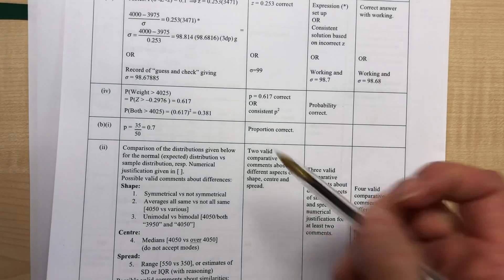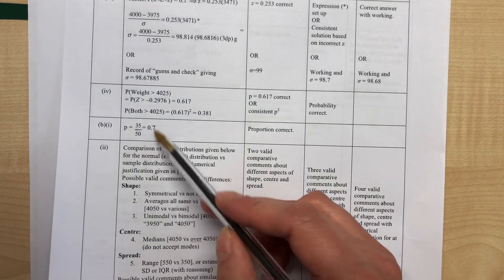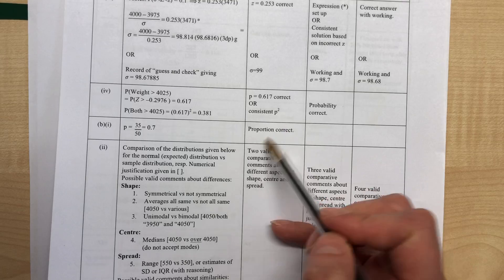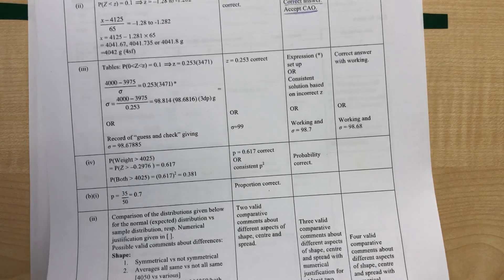If we take a quick look at the marking schedule, you can see just here that working out that simple probability gives us a U mark for achieved.